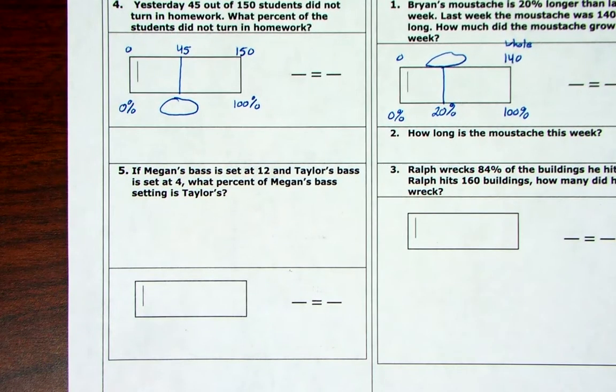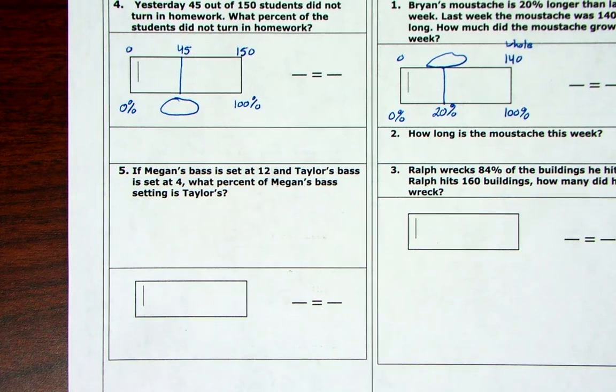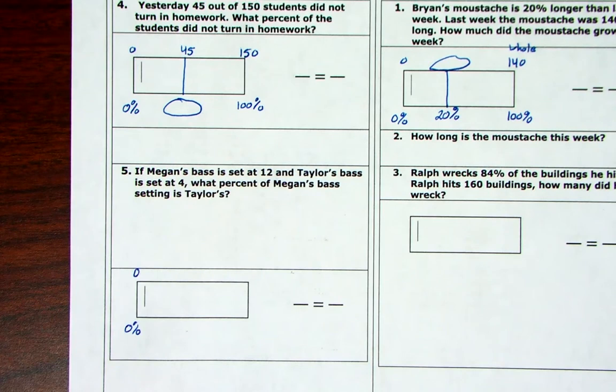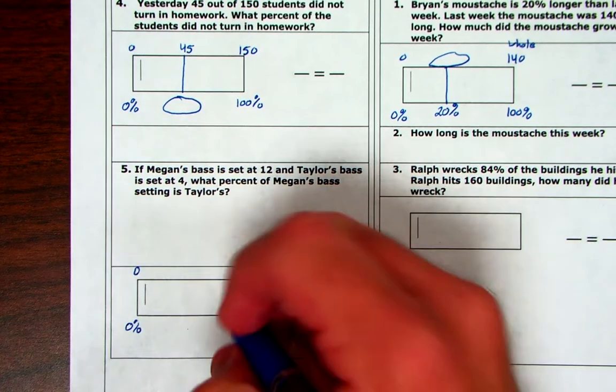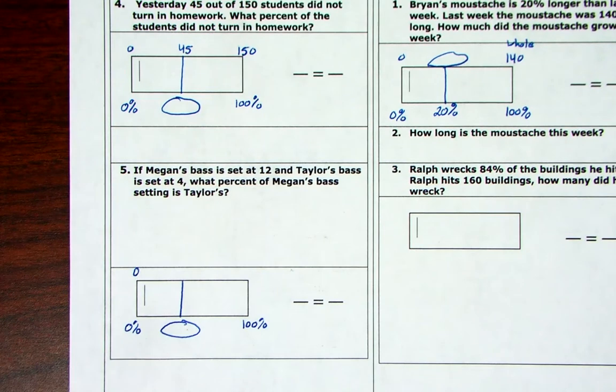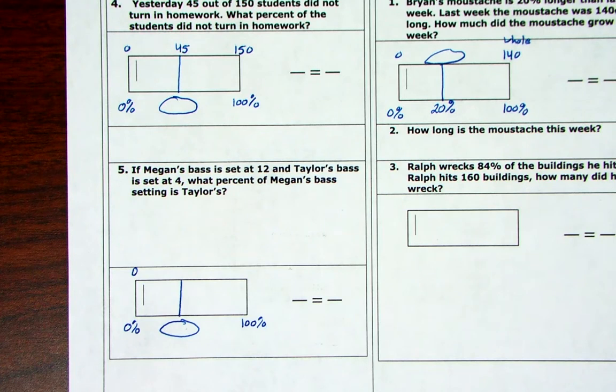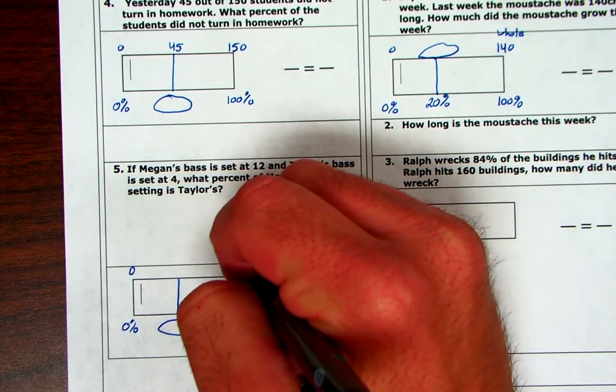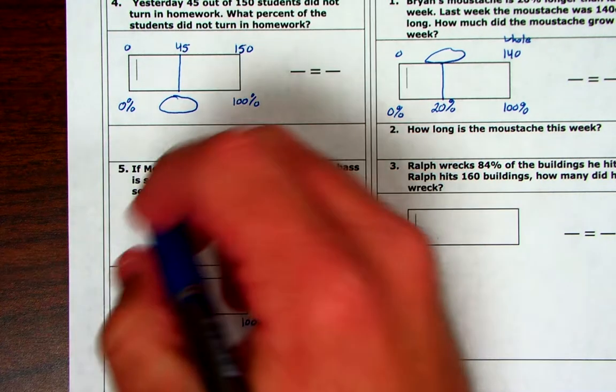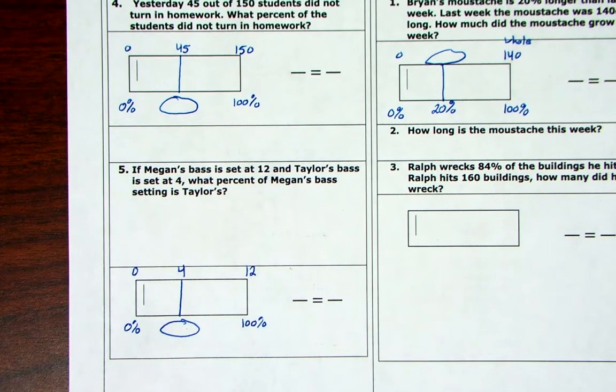If Megan's bass is set at 12 and Taylor's bass is set at four, what percent of Megan's bass setting is Taylor's? That's a weird sounding problem, but here we go. Now, if you look closely enough at the problem, does it give you a percent? No. So guess what? You are solving for the percent. This is what we're solving for. Now, it gives you the part, and it also gives you the whole. The whole is Megan's bass, which is 12. It also gives you the part, which is Taylor's bass. Well, again, it's set up. You get to go solve it.